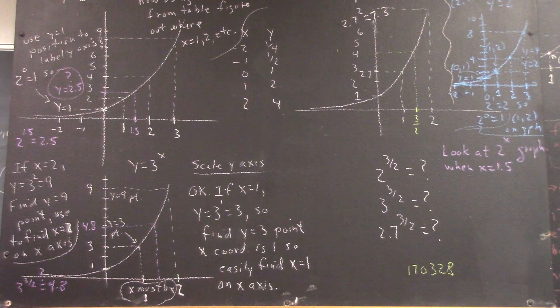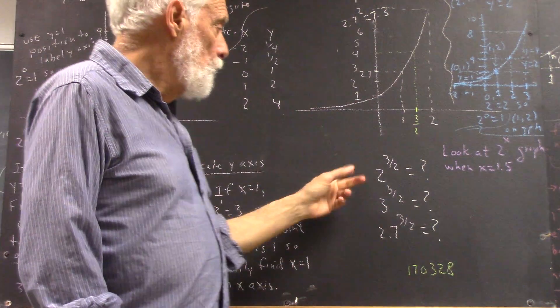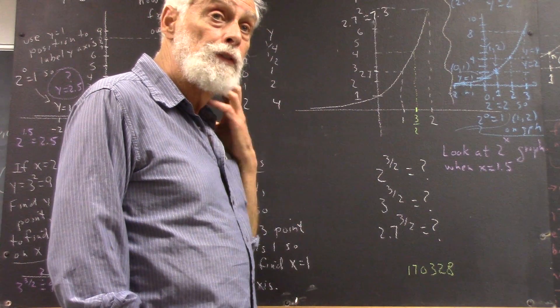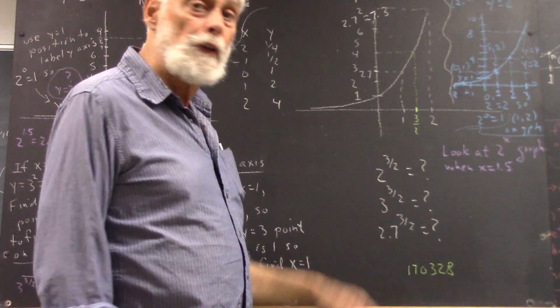Okay, well, the next question is, let's find 2 to the 3 halves, let's find 3 to the 3 halves, and let's find 2.7 to the 3 halves.